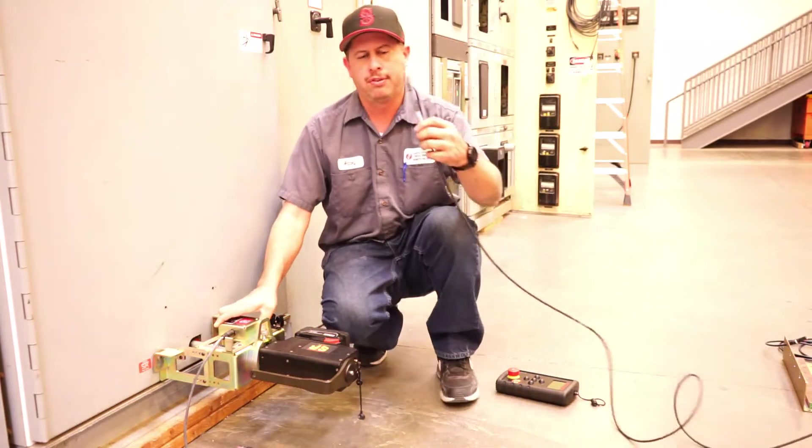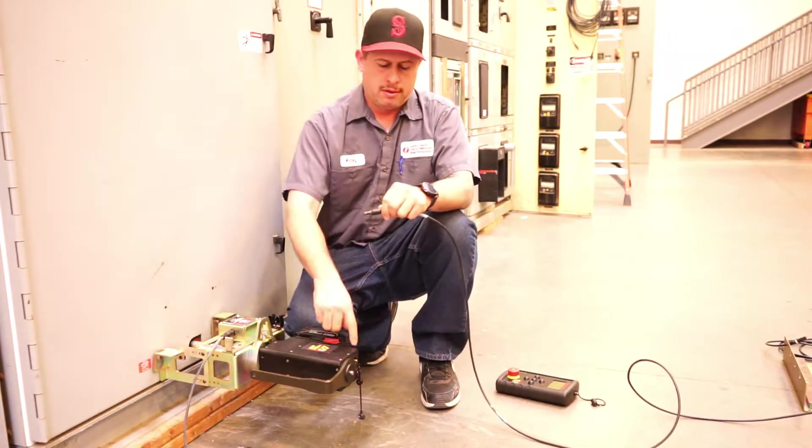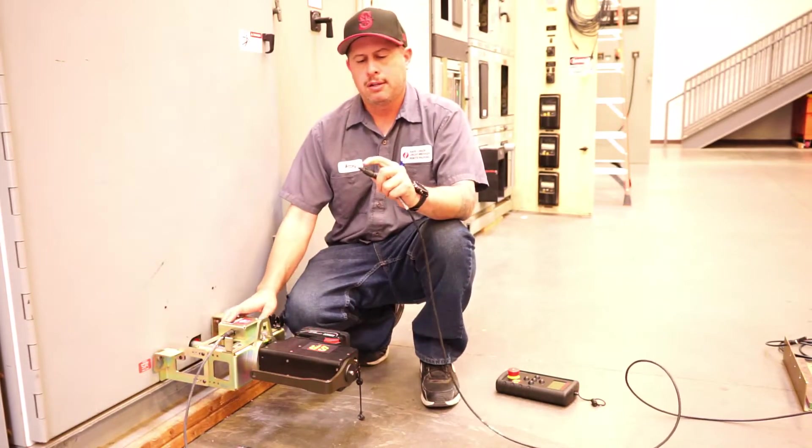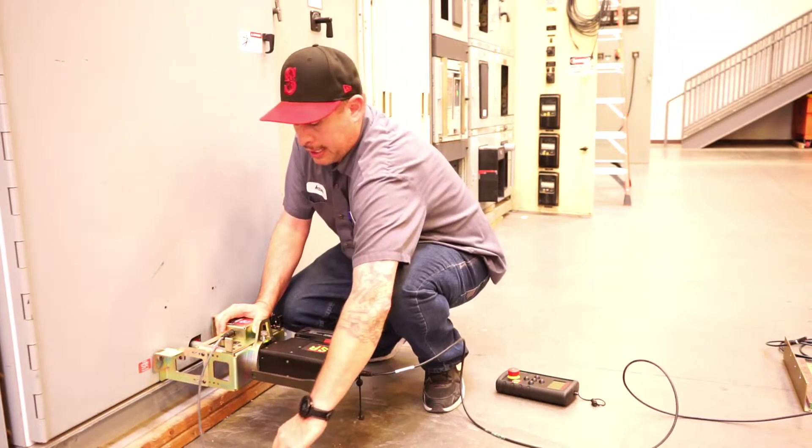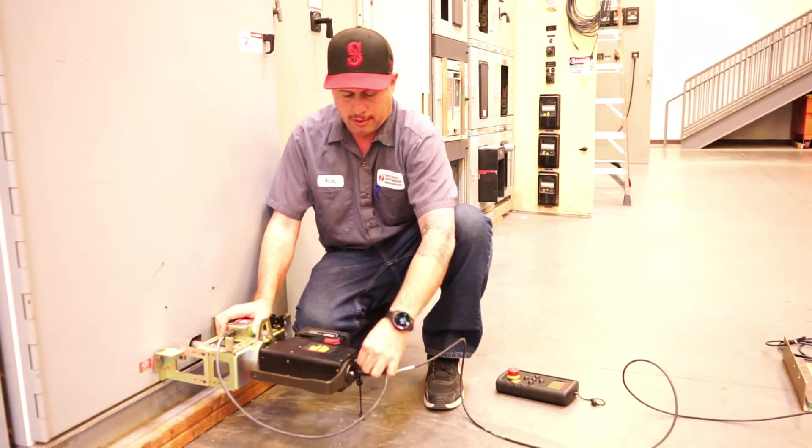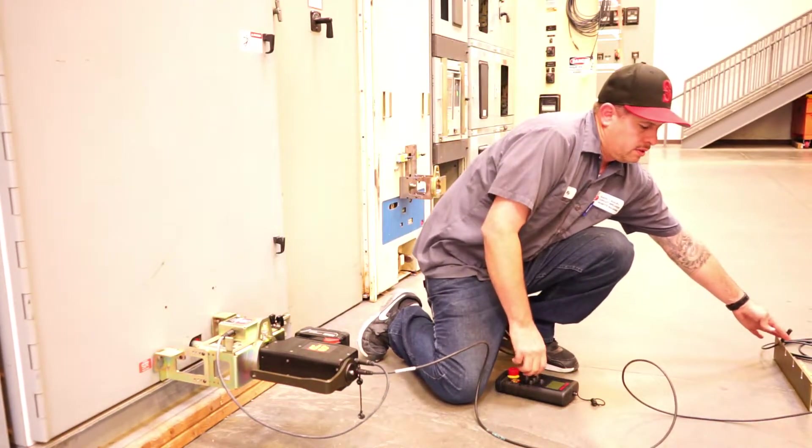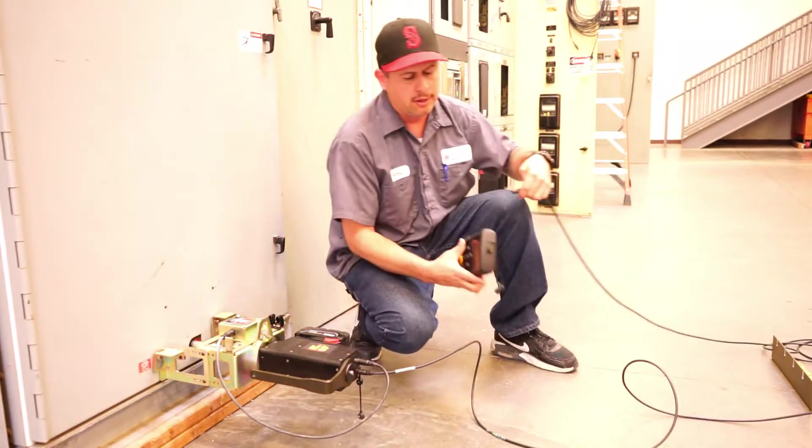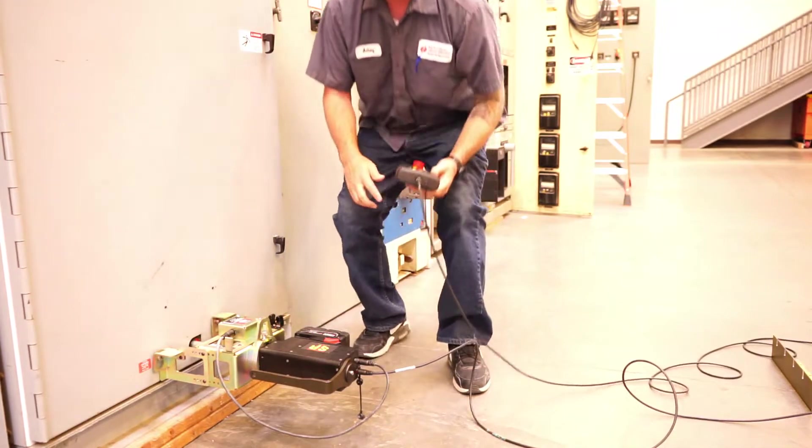Next, you'll want to get your 50 foot cord and plug it into the MDU. These connectors are keyed, so it'll only fit one way. Next, get your bracket and plug it into the motor as well. Then you'll get the other end of the cable and put it into the handheld.